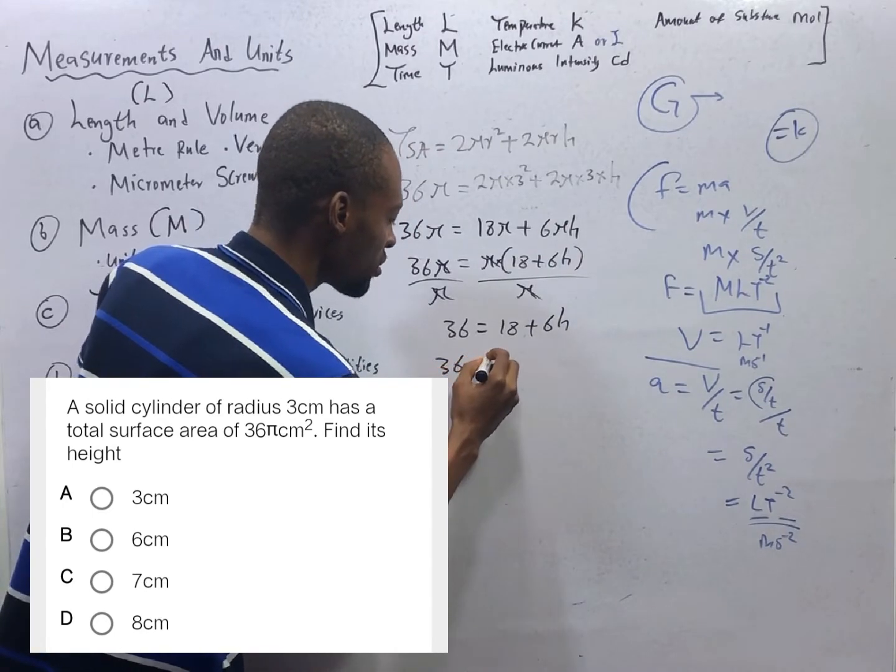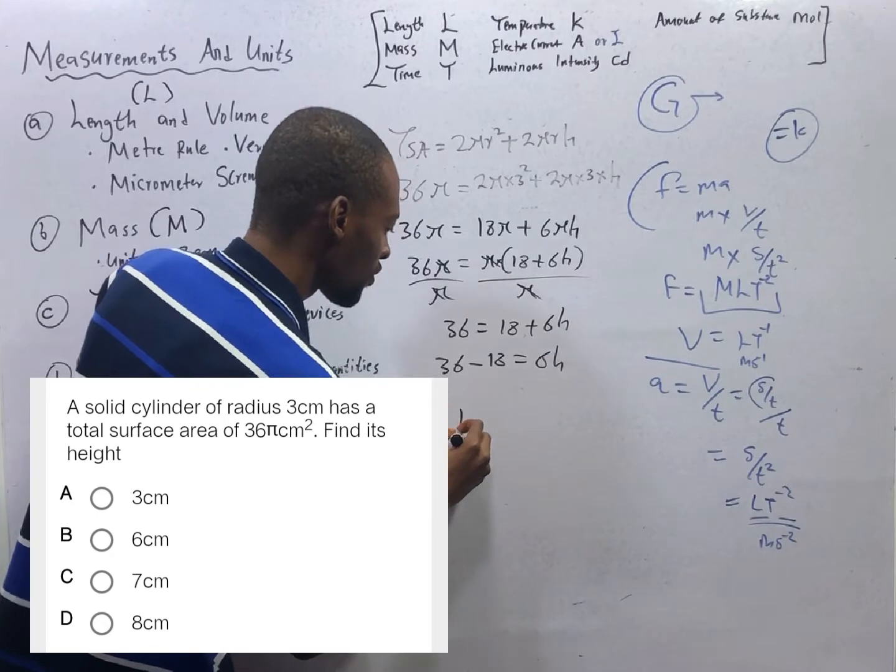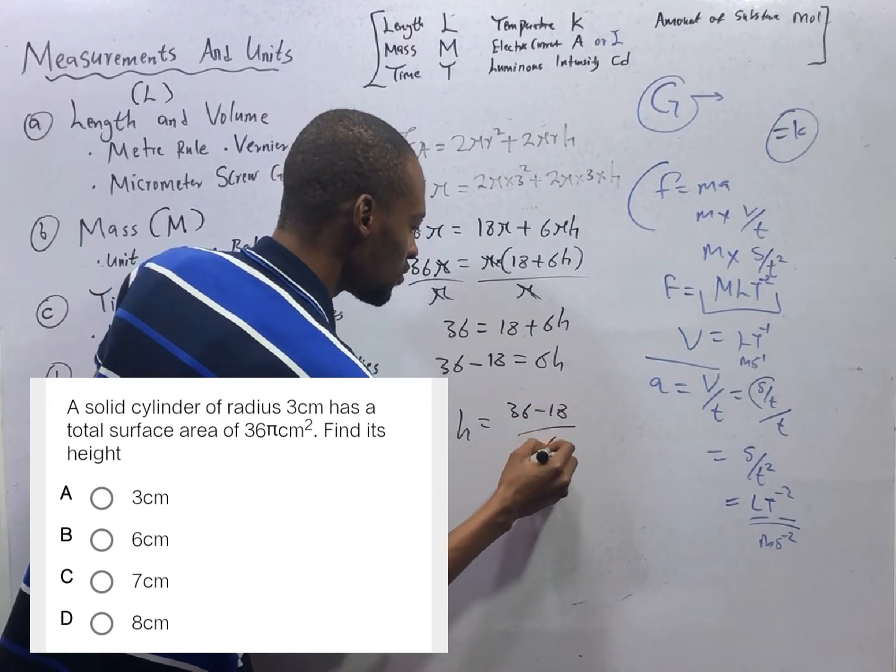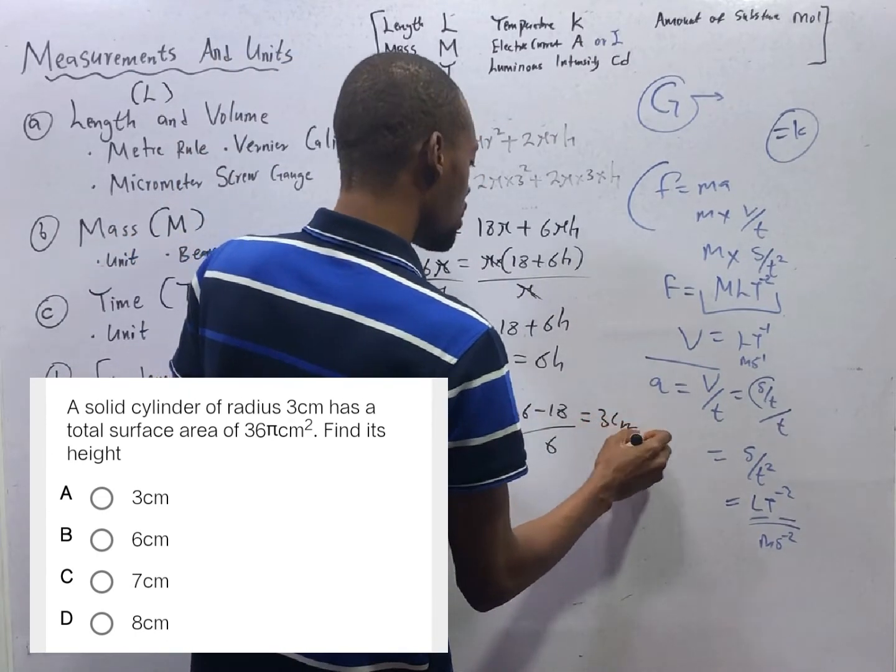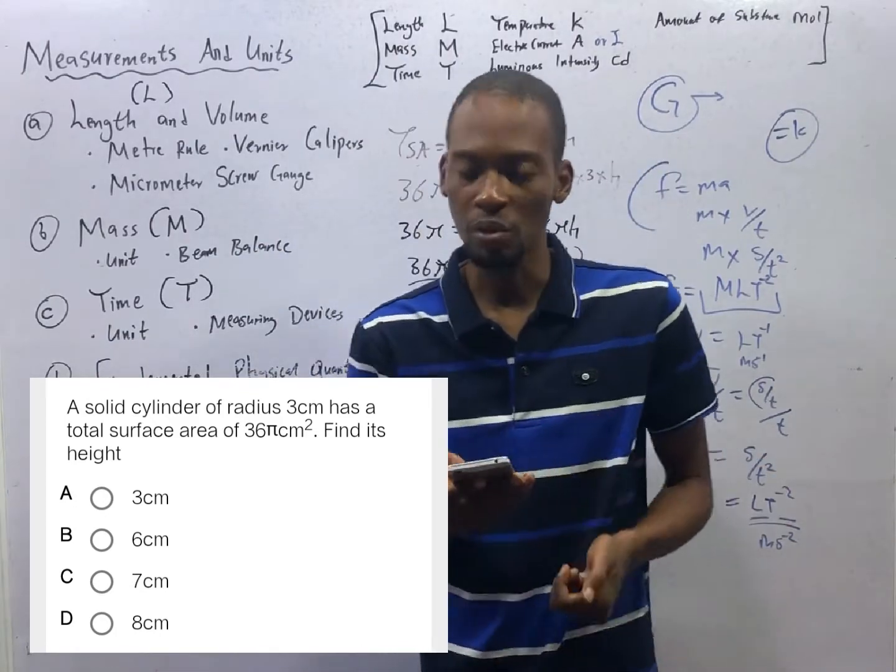So 36 is equal to 18 plus 6h. 36 minus 18 is equal to 6 h. h is equal to 36 minus 18 over 6. That is your value of height. According to me, it is 3 cm. If you get something else, you let me know. Then we will negotiate it.